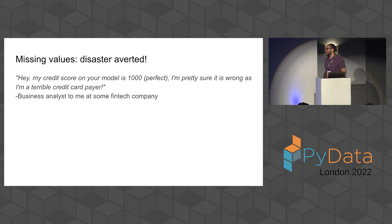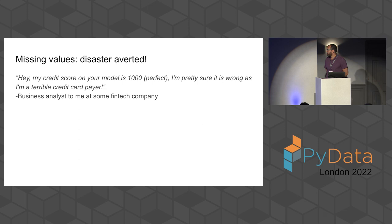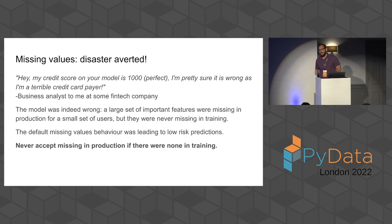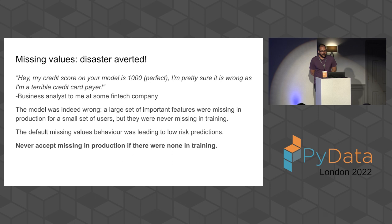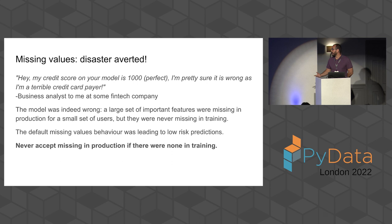But sometimes that can lead to disaster. This is a real example that happened to me. I was working for a fintech building a credit risk model — it had great metrics and was already in production. A business analyst told me my model gave him a perfect credit score, but he was sure that was wrong because he was a terrible credit card payer. I dug deeper and realized the model was indeed very wrong: a large set of important features were missing in production for a small set of users, but those features were never missing in training. So the model never learned what to do with them, and the default behavior led to low risk scores all the time. The lesson: you should never accept missing values in production if they were not present in training, no matter what method you use.